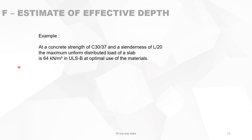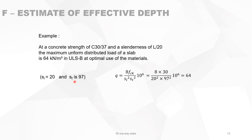For example, at concrete strength C30/37 and a slenderness of L over 20 (which is very common), the maximum uniform distributed load is 64 kilonewton per square meter in ULS at optimal use of materials. You do not need to know the span or the depth of the slab. With SL = 20 and SF = 97 at optimal use of material, applying the formula gives 64 kilonewton per square meter. This slab, with slenderness L over 20 and optimal use of materials, can never carry more than 64 kN/m².